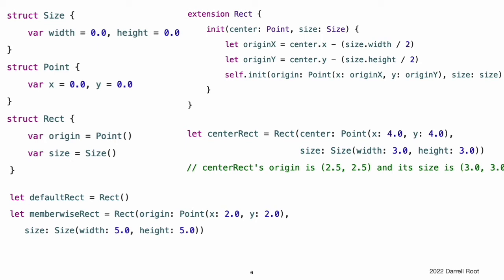Because the rect structure provides default values for all of its properties, it receives a default initializer and a member-wise initializer automatically as described in default initializers. These initializers can be used to create new rect instances.